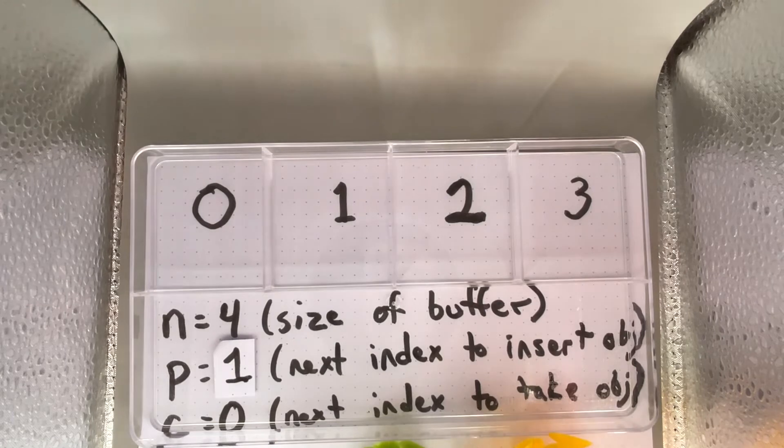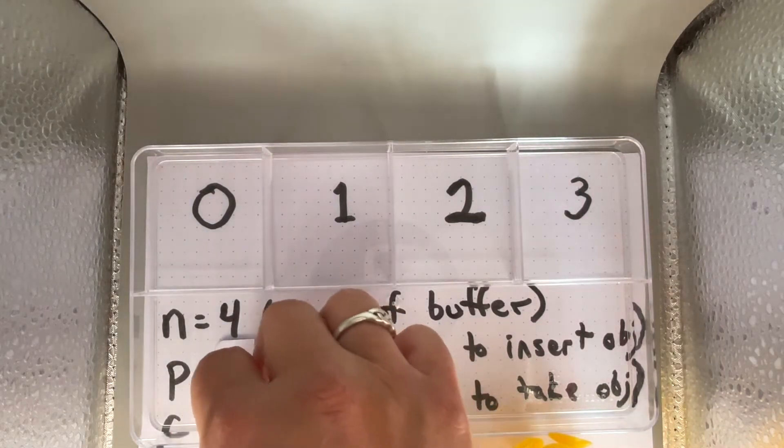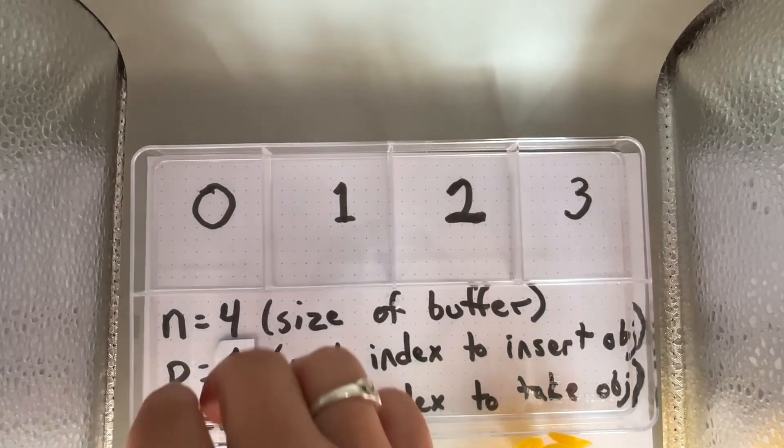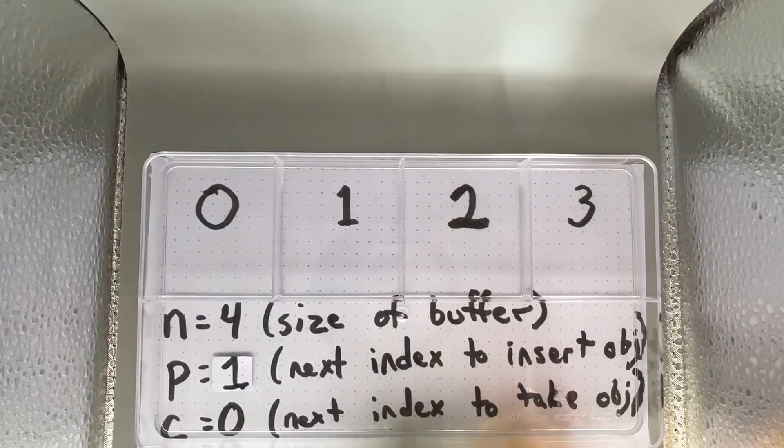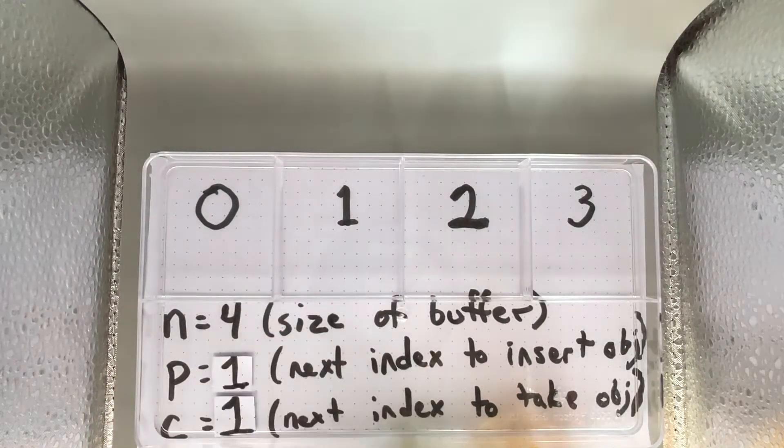What this means is that the producer's next place in the buffer to put an object is at 1. The consumer has taken the object that was at 0, so the next object that it will remove is also 1.